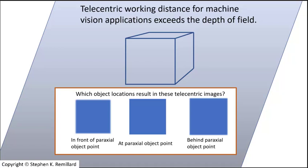The detector array will indicate the same image height at the screen for a range of object locations. In many machine vision applications, that might be all that is needed in order to locate an edge or to measure a part dimension. For the purpose of machine vision using object-side telecentricity, the working distance has quite a bit larger range than just the depth of field, which is constrained by image quality.